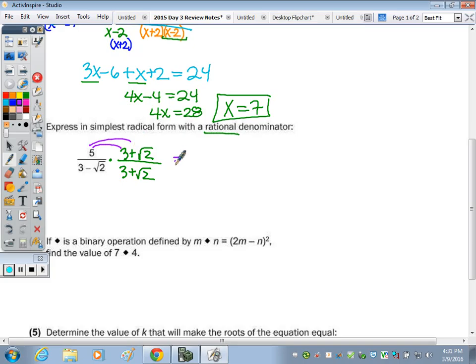Multiplying that binomial times 5, we get 15 plus 5 radical 2, and since the denominator, since those two expressions that I'm multiplying are conjugates, I only need to do the first and last of FOIL. So 3 times 3 is 9, minus radical 2 times radical 2 is 2.